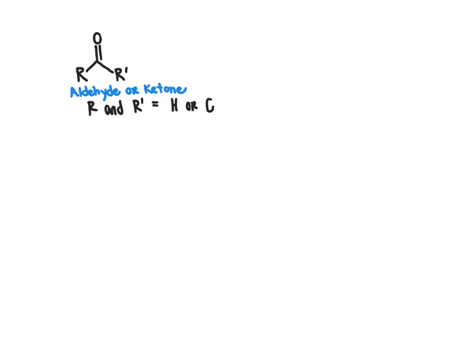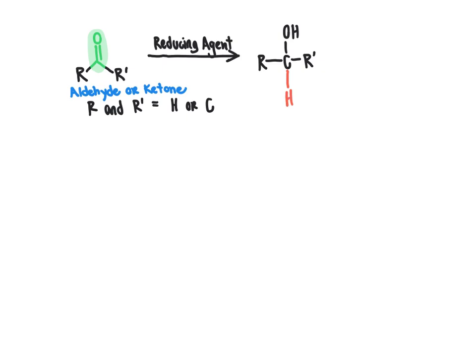What we will do is treat this with a reducing agent in order to reduce that carbon-oxygen double bond to a carbon-oxygen single bond. Once we make that a carbon-oxygen single bond, we're going to be prone to having an alcohol as our product. Our final product is that we've created a new carbon-hydrogen bond by adding a hydrogen to that carbonyl carbon, yielding an alcohol product.